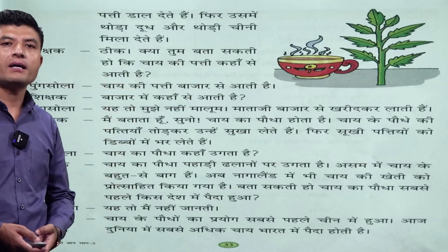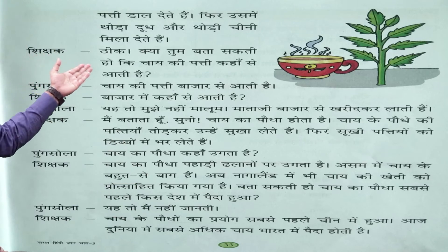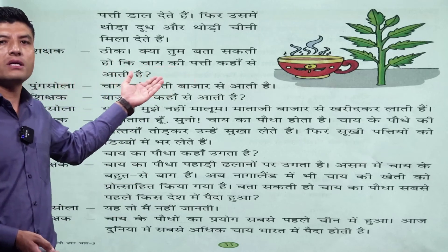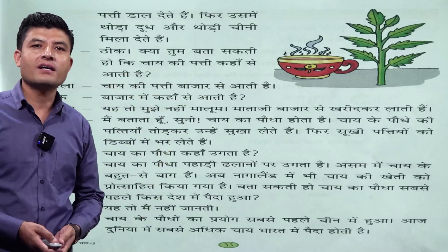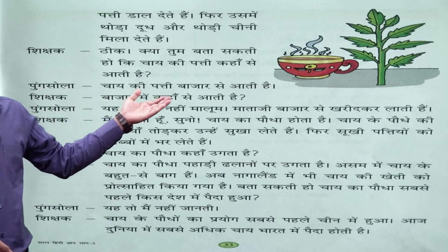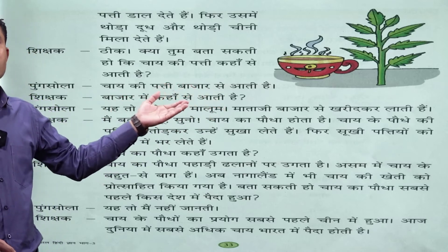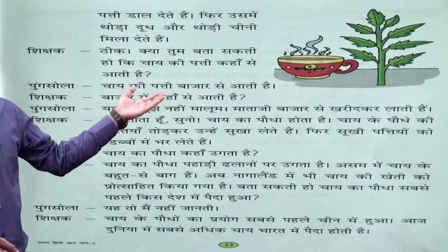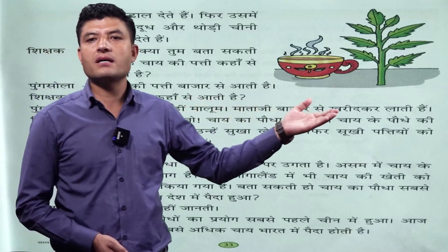Sikchak kehte hain: 'Theek — right, you are correct. Kya tum bata sakti ho ki chai ki patti kahan se aati hai?' From where do we get tea leaves? Punsola bolti hai: 'Chai ki patti baazaar se aati hai.' We buy it from the market. Sikchak: 'Baazaar mein kahan se aati hai?' Toh Punsola bolti hai: 'Yeh toh mujhe nahi maloom' — I don't know, teacher. 'Mata ji baazaar se khareed kar laati hai' — mother buys it from the market.